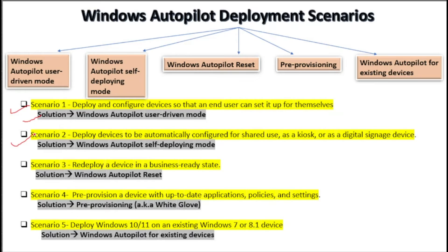The second scenario is where we want to deploy and configure the device automatically — basically the device could be a shared device, kiosk, or digital signage device. In that case we can use Windows Autopilot self-deploying mode. The third scenario is where we want to redeploy a device in a business-ready state. In that case we can use the Windows Autopilot reset option.